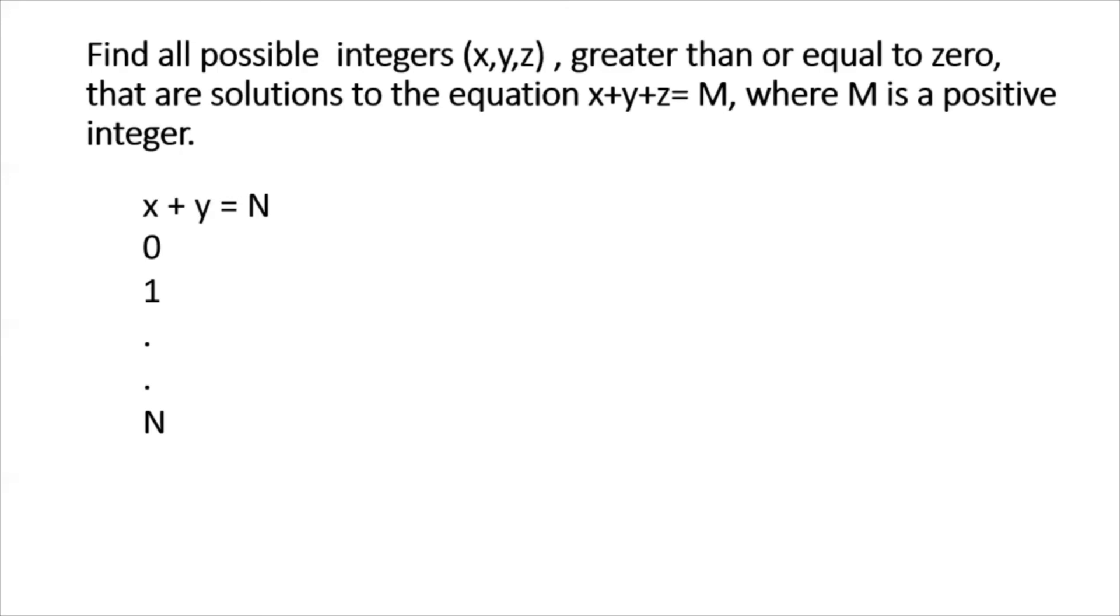So, these are obviously the list of potential non-negative integer values that x can take. It can go all the way from 0, 1 through n. And that would be a total of n plus 1 values. And for each such value x takes, there is one solution for x and y. So, together we have n plus 1 solutions for the simpler two-variable equation.